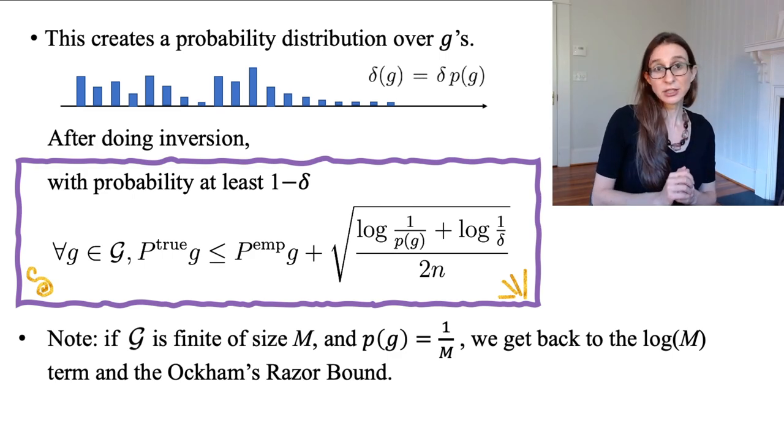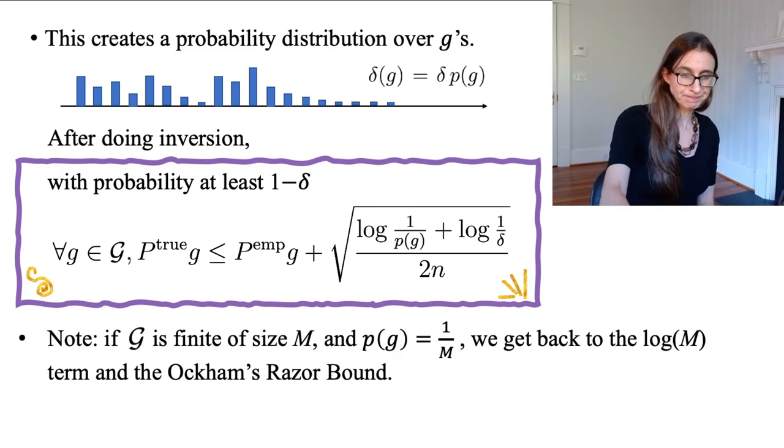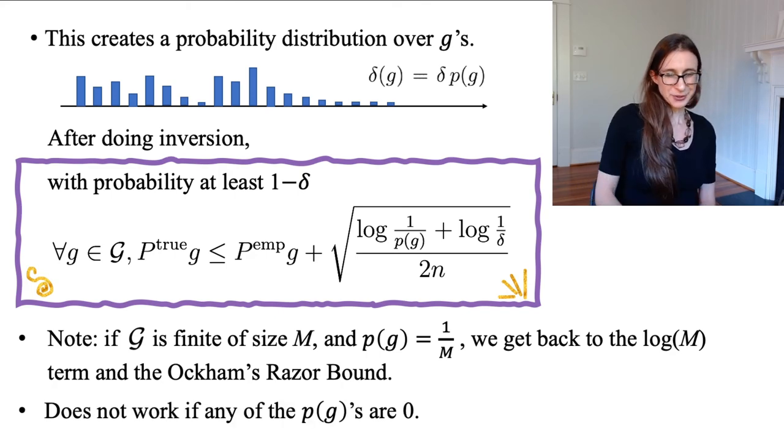So this is literally strictly more general, and of course it doesn't work when any of the P(g)'s are 0, but I don't know why you'd set any of the P(g)'s to 0, so just don't do that if you're going to use this bound.